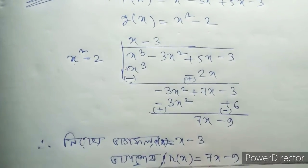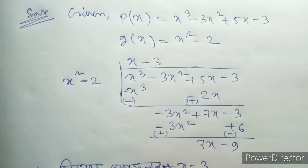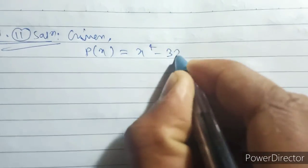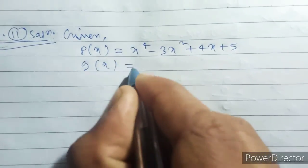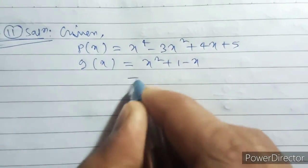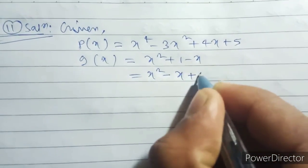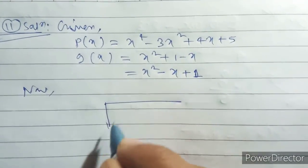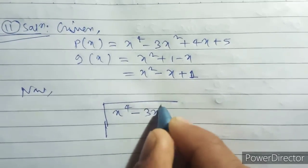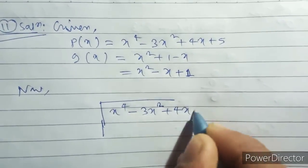Seven x minus nine — that's the result. Not a p(x) equal x to the power 4 minus 3x squared plus 4x plus 5. r(x): x squared plus 1 minus x, so x squared minus x plus 1. Now x to the power 4 minus 3x squared plus 4x plus 5, divided by x squared minus x plus 1.